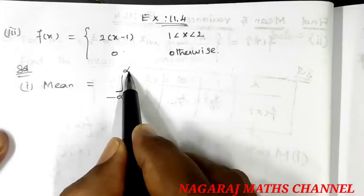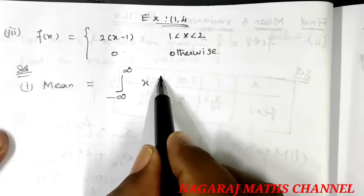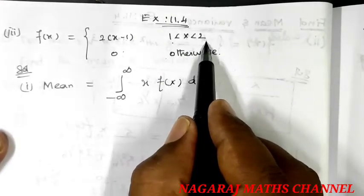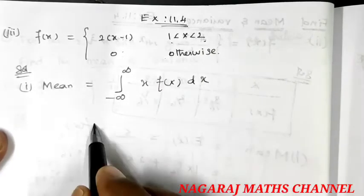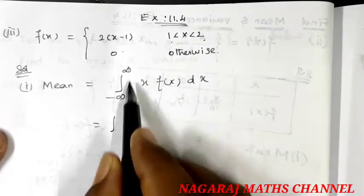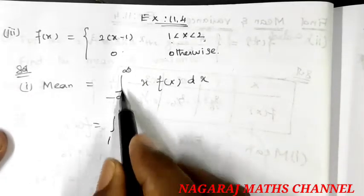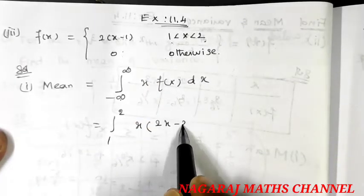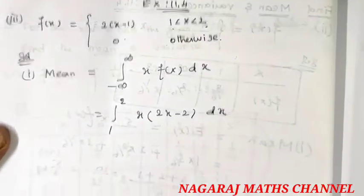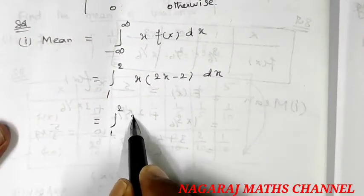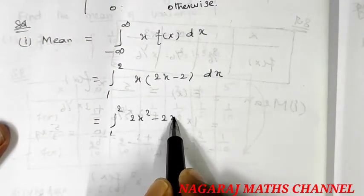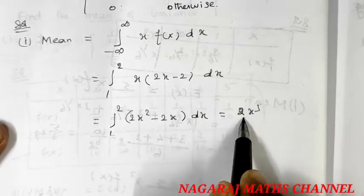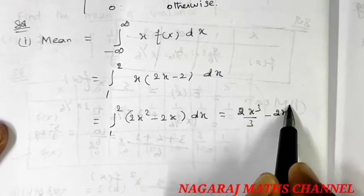The mean E(x) equals the integral from minus infinity to plus infinity of x times f(x) dx. The limits here are 1 and 2, since outside this interval the value is 0. So we integrate from 1 to 2 of x times (2x minus 2) dx, which gives us the integral of 2x squared minus 2x dx.